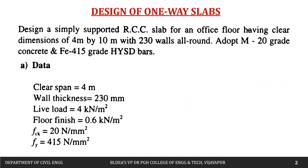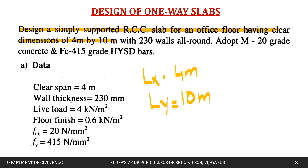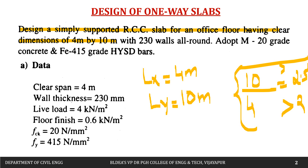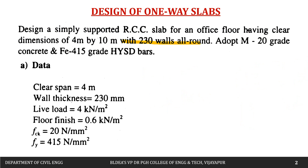The problem: design a simply supported RCC slab for an office floor having clear dimensions of 4 meters by 10 meters. Taking ly as the longer span and lx as the shorter span, ly/lx = 10/4 = 2.5, which is greater than 2. Therefore this slab is to be designed as a one-way slab. Wall thickness is 230 mm all around.